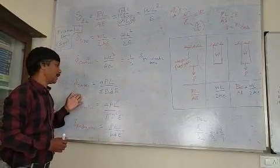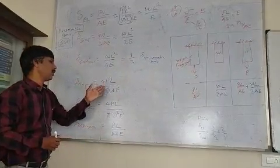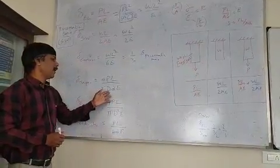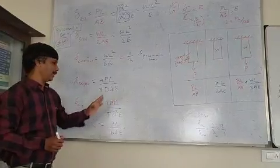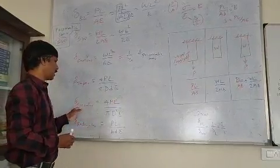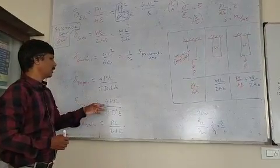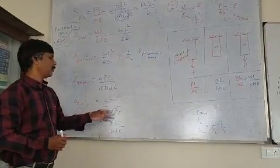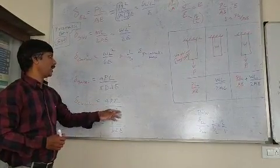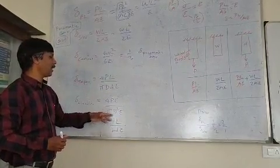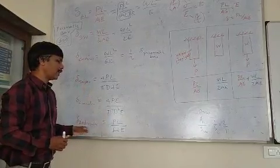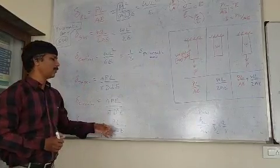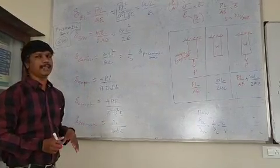For a circular cross-section, deformation is 4PL by π·D². Area is π·D² by 4. For a rectangular section, deformation is PL by the cross-sectional area.